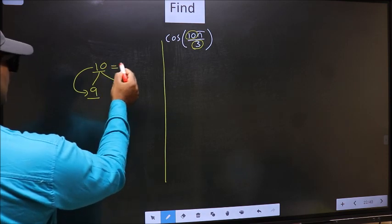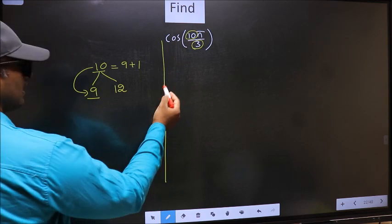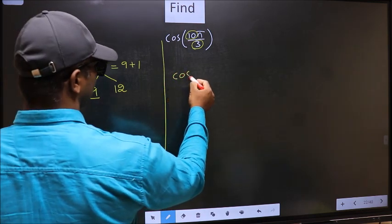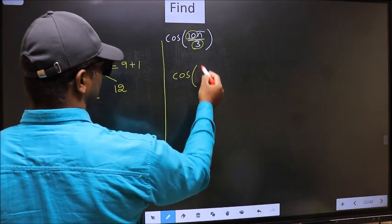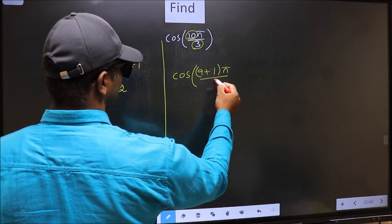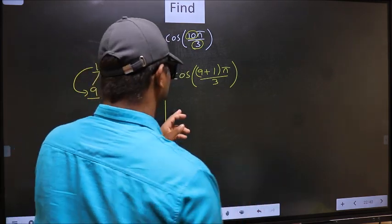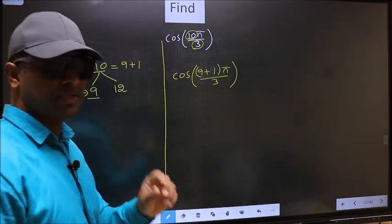So now 10 should be written as 9 plus 1. So this will become cos. In place of 10, now you write 9 plus 1, π by 3. This is your step 1.